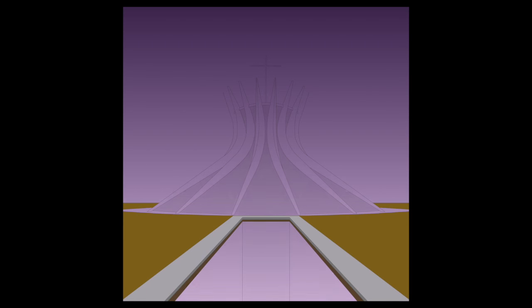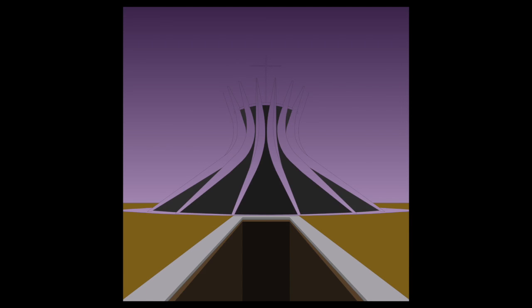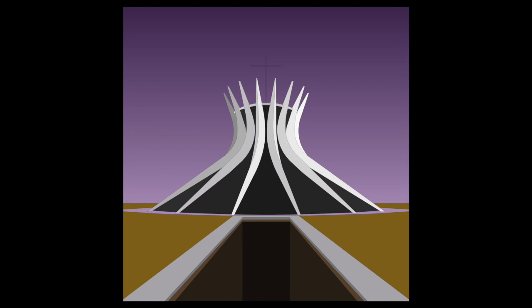Oscar Niemeyer designed the Roman Catholic Cathedral of Brasilia. The building is constructed with 16 sections of concrete that create a hyperboloid shape. Each weighs almost 200,000 pounds. The building was completed in 1970.